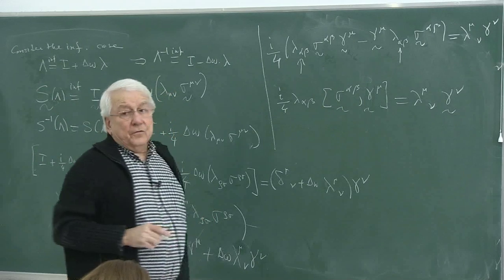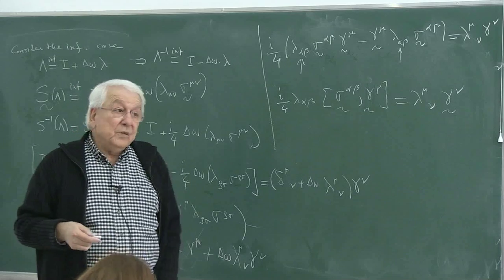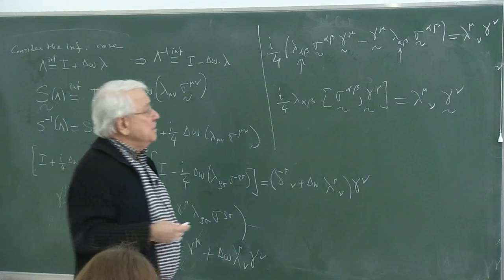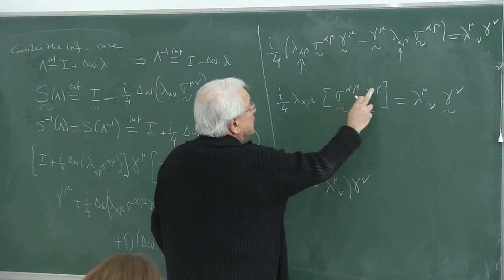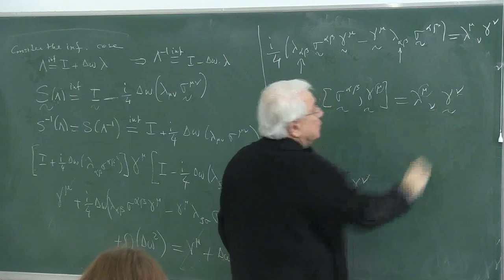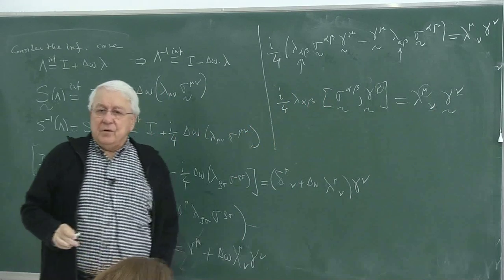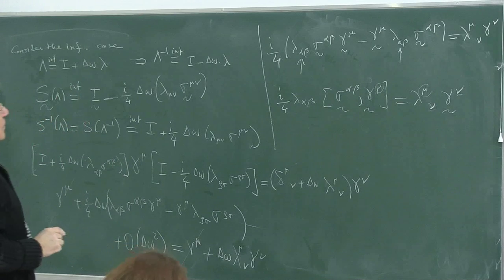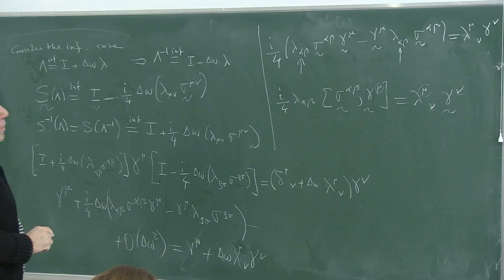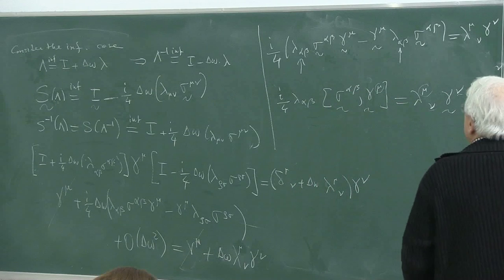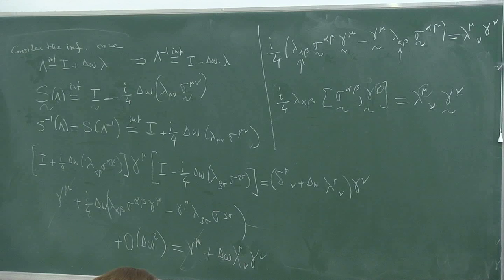Let's check the indices first — when you see such a complicated expression, the first thing to check is the indices. Alpha-beta are contracted, mu is the free index on both sides — consistent. Now, how do I convert everything to make the same index structure appear on both sides?